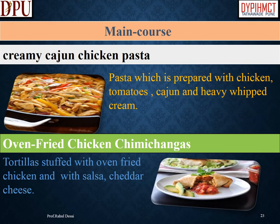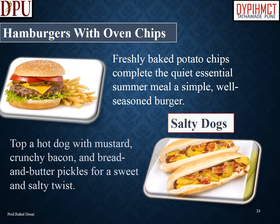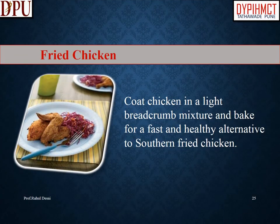Famous main courses of North America: Creamy Cajun chicken pasta is prepared with chicken, tomatoes, Cajun seasoning, and heavy whipped cream. Oven-fried chicken chimichangas are tortillas stuffed with oven-fried chicken, salsa, and cheddar cheese. Hamburgers are served with freshly baked potato chips for a simple, well-seasoned summer meal. Salty dogs are hot dogs topped with mustard, crunchy bacon, and bread and butter pickles for a sweet and salty twist. Fried chicken is coated in a light breadcrumb mixture and baked as a healthy alternative to southern fried chicken.